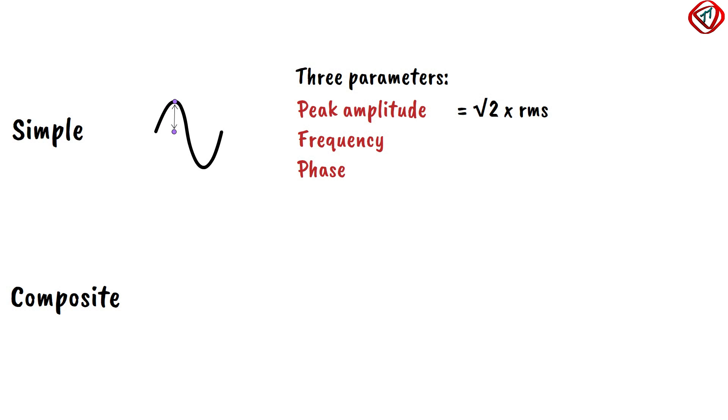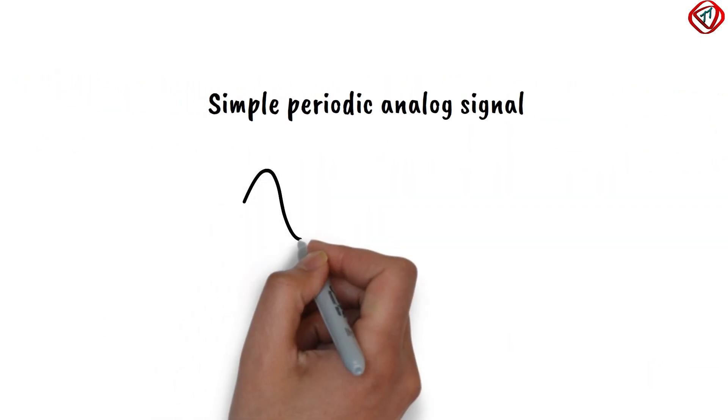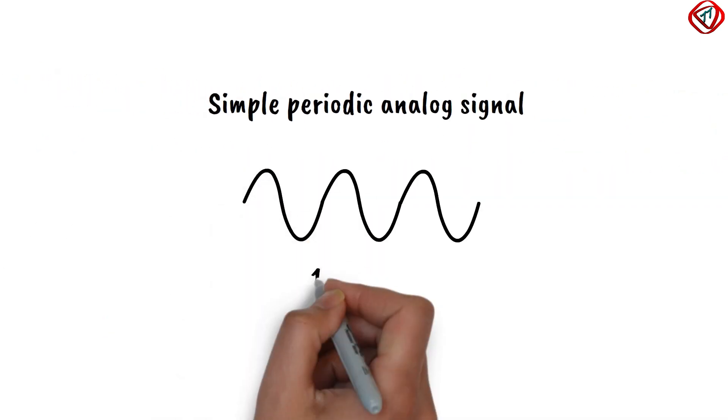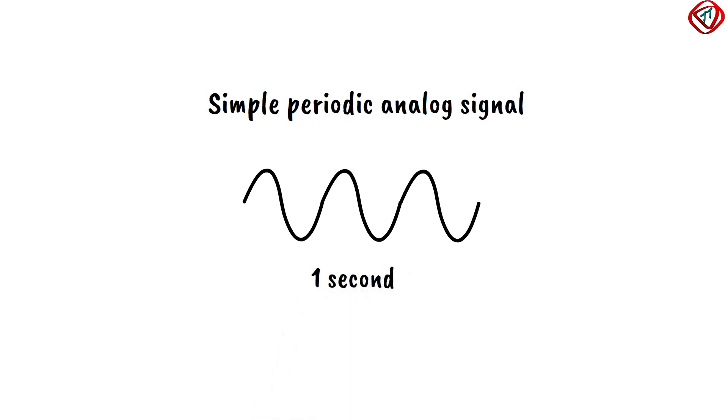Frequency is the number of times a periodic signal repeats in one second. Suppose a simple periodic analog signal repeats three times in one second, so its frequency is 3 Hz.